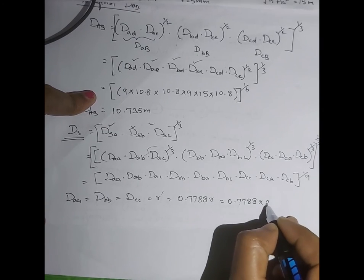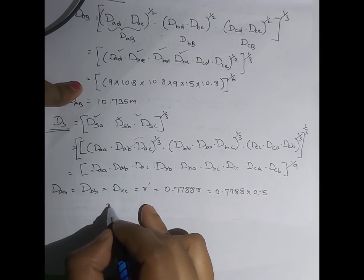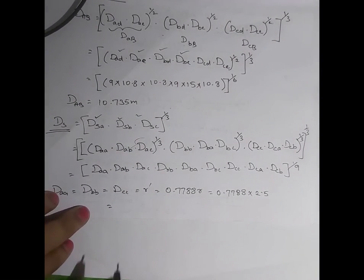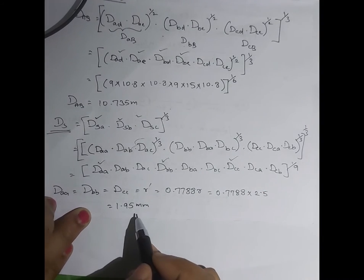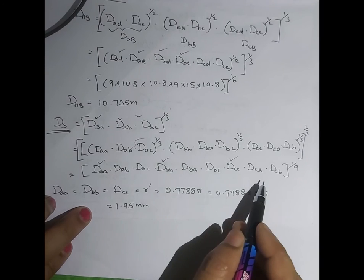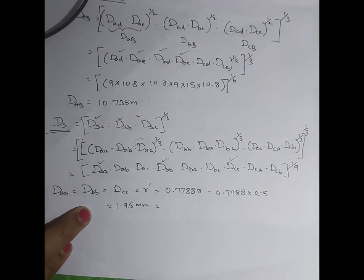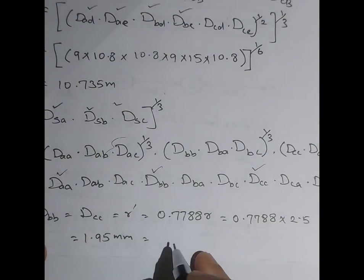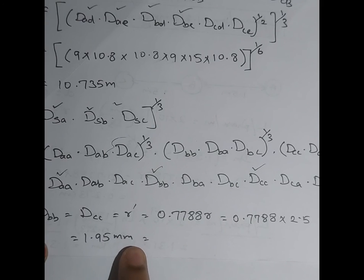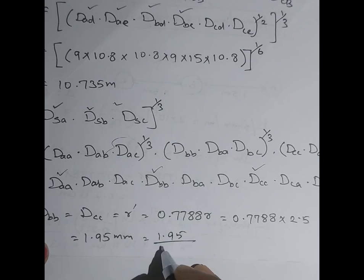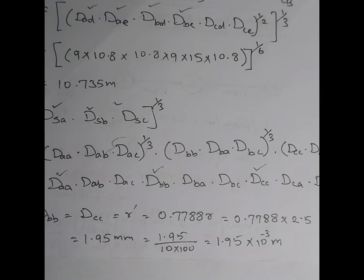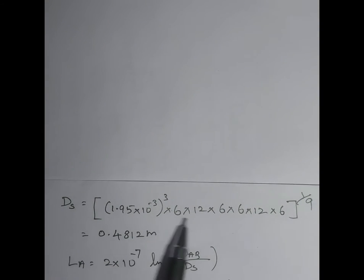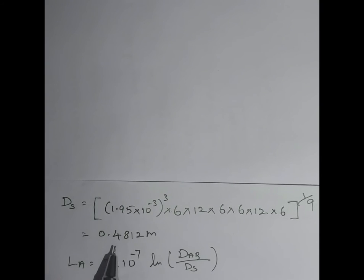So r' = 0.7788 × 2.5 = 1.95 mm. Since other distances are in meters, we convert: 1.95 mm = 1.95 × 10⁻³ m. Solving for self GMD after substituting all values we get Ds = 0.4812 m.